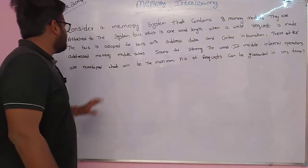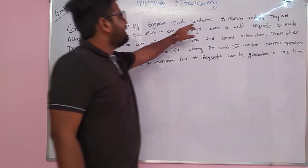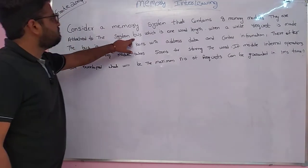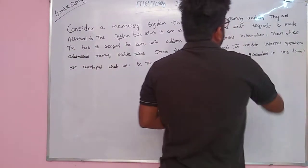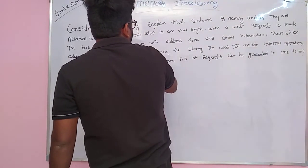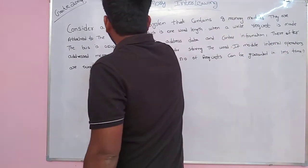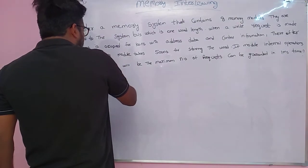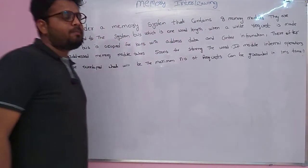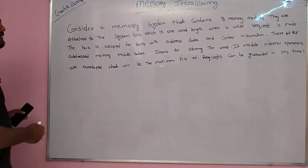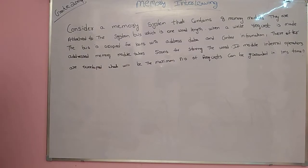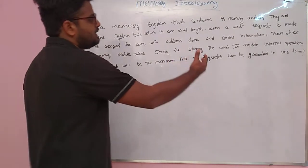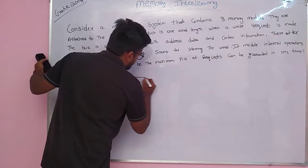This question was asked in GATE 2009. They say consider a memory system that contains eight memory modules attached to the system bus, which is one word length. When a write request is made, the bus is occupied for 100 nanoseconds with address, data and control information. Thereafter, the memory module takes 500 nanoseconds for storing the word. If module internal operations are overlapped, what is the maximum number of requests that can be granted in one millisecond?